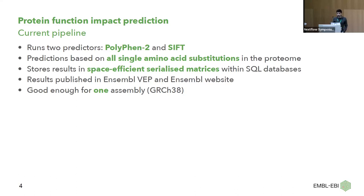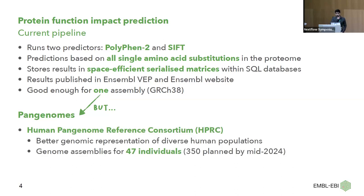This pipeline is currently good enough for one human assembly, which is what we use. But with the emergence of pangenomes by the Human Pangenome Reference Consortium, we thought about redesigning this pipeline to handle much more data. The HPRC intends to provide better genomic representation of diverse human populations. Currently they release genomic assemblies for 47 individuals, and it's estimated to go up to 350 by mid-2024.